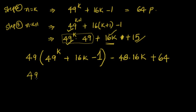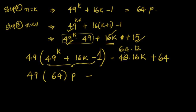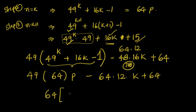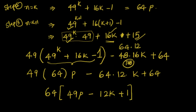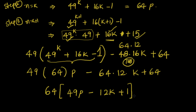Let us look at how it looks. This is nothing but 49 into 64p, minus 48 into 16k — which we can write as 64 into 12k because 48 times 16 equals 768 — plus 64. So we can write it as 49 into 64p, minus 64 into 12k, plus 64. Now you can see the second term is a multiple of 64 and the first term is also a multiple of 64. Taking 64 common, we have 64 into the quantity 49p minus 12k plus 1, proving that n equal to k plus 1 is a multiple of 64.